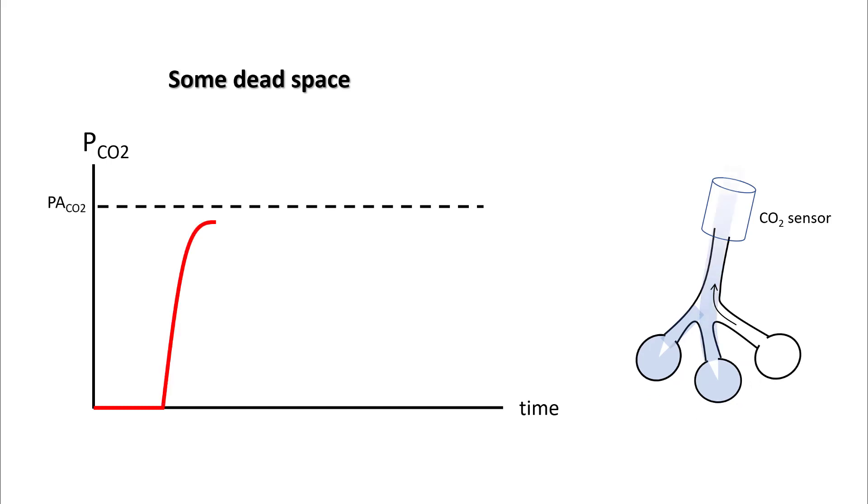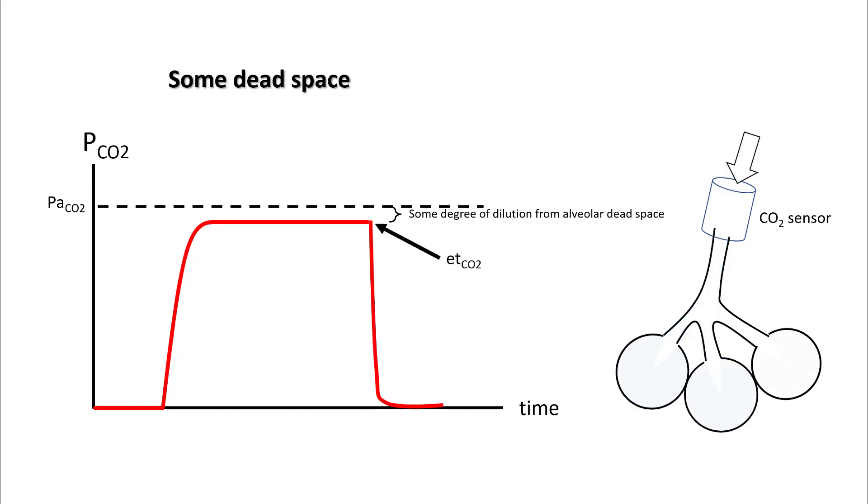In the second phase of the capnogram, the carbon dioxide from the normal alveoli is diluted from the air from the dead space alveoli. So your CO2 sensor will read a little lower than your actual alveolar CO2. The degree of dilution will depend upon how much alveolar dead space you are encountering. Your end-tidal therefore will be lower than alveolar CO2.